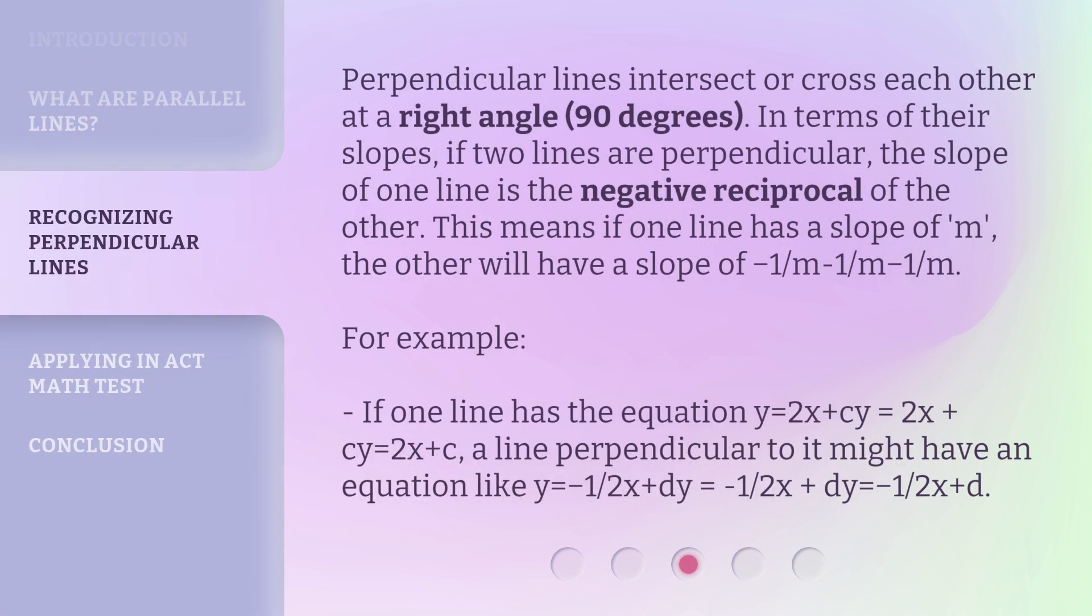Perpendicular lines intersect or cross each other at a right angle (90 degrees). In terms of their slopes, if two lines are perpendicular, the slope of one line is the negative reciprocal of the other. This means if one line has a slope of m, the other will have a slope of -1/m.